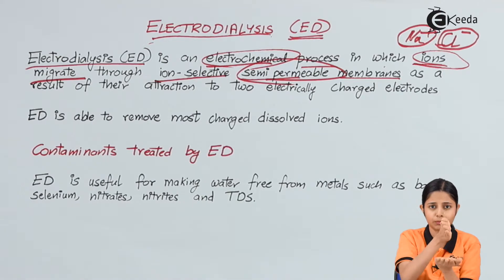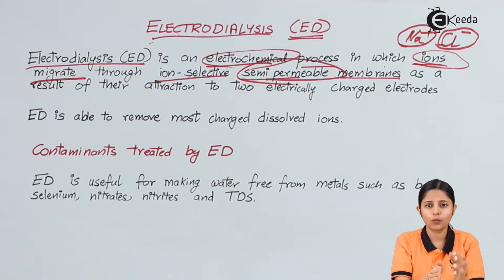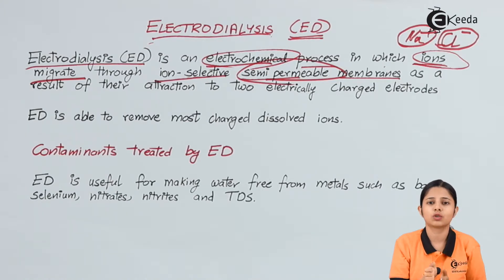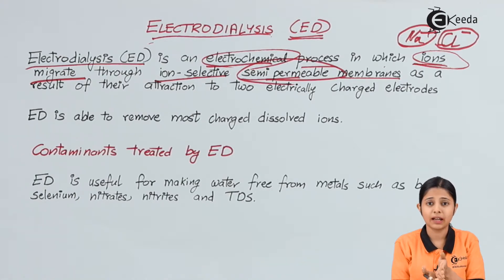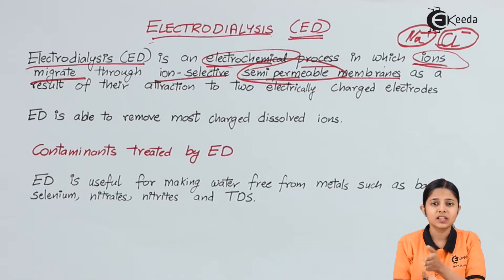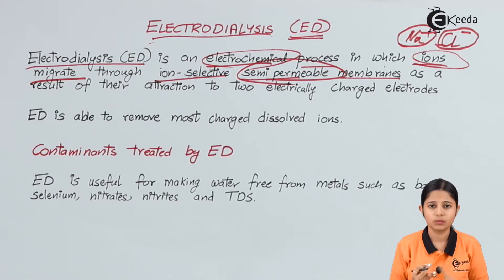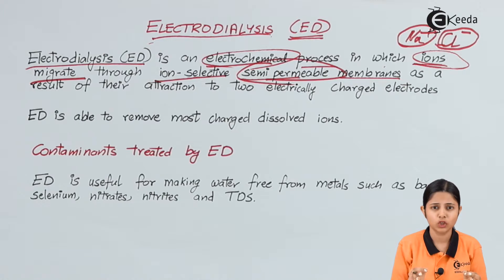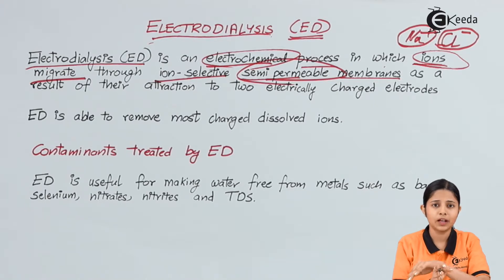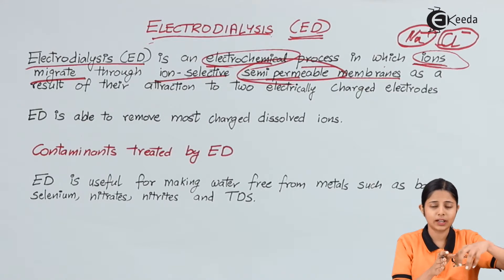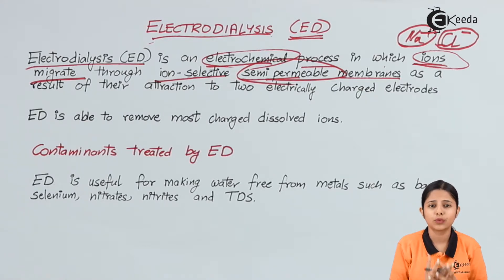If I have a water sample and I put a semi-permeable membrane in the middle, the ions will flow from one end to another through this membrane. However, this flow cannot happen on its own because all ions and molecules are in random motion in a water sample. To make them flow from one end to another, we need to apply some charge — electricity. When we provide a potential difference, the positive ions will flow from one direction to another, pass through the semi-permeable membrane, and we can collect those ions from the other side, making the water sample free from those ions.